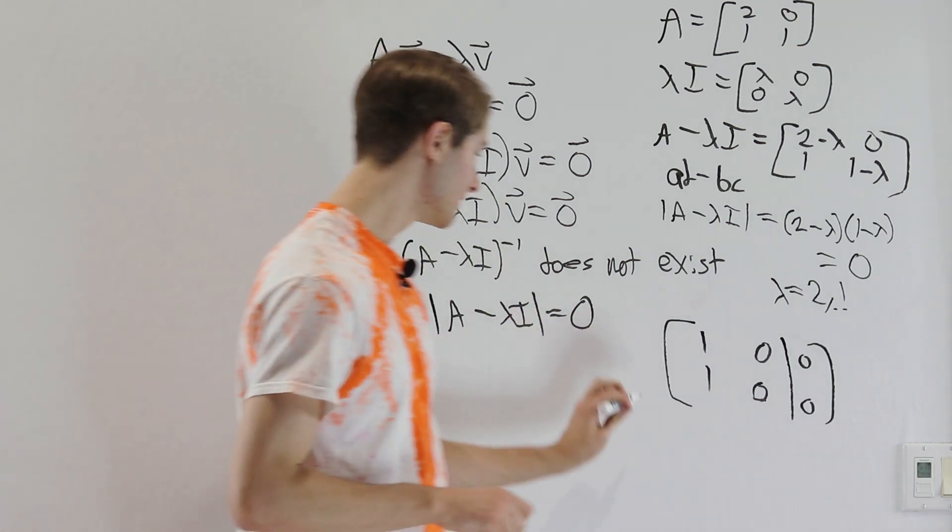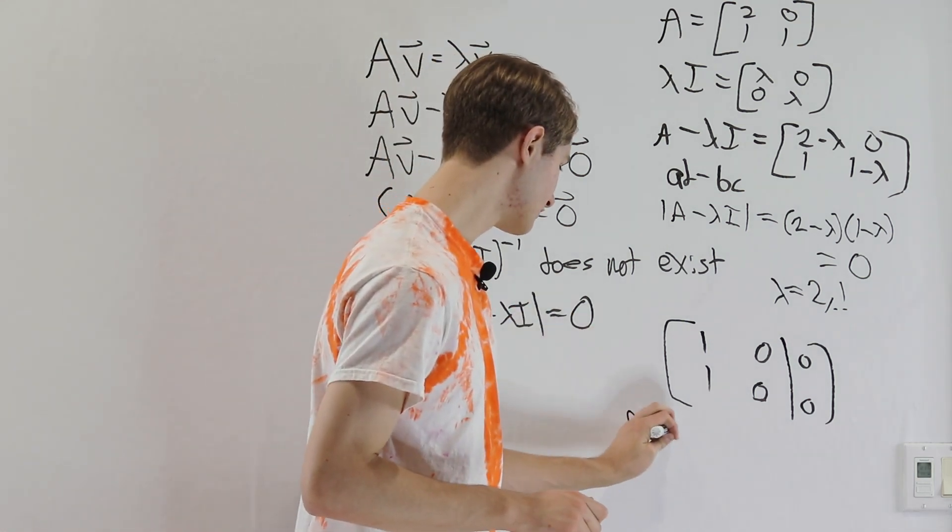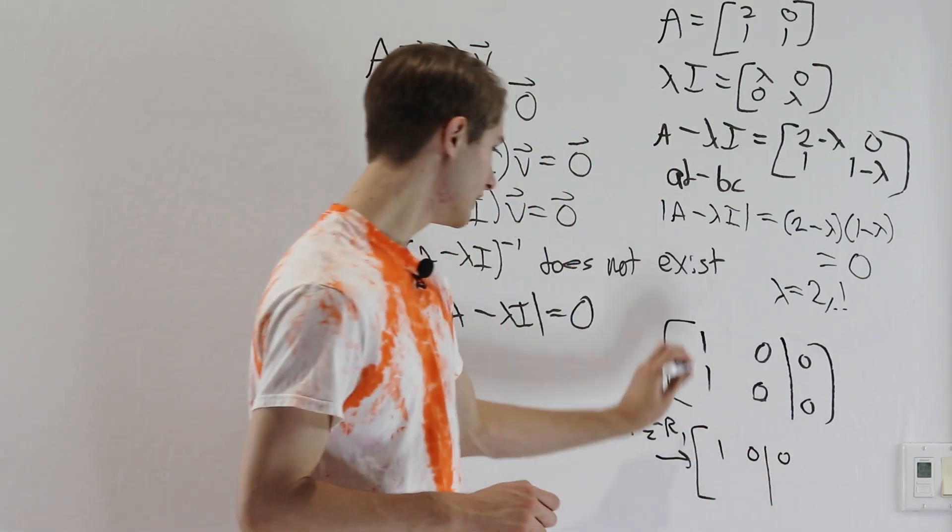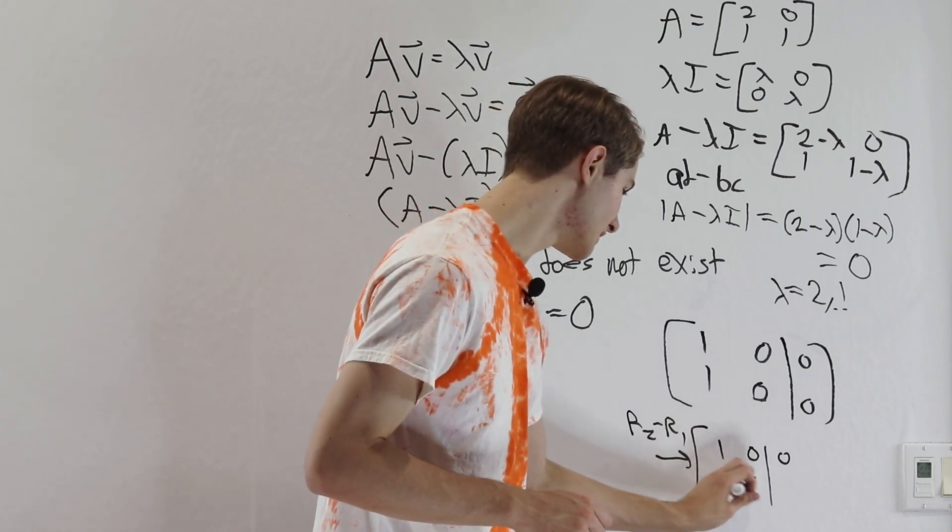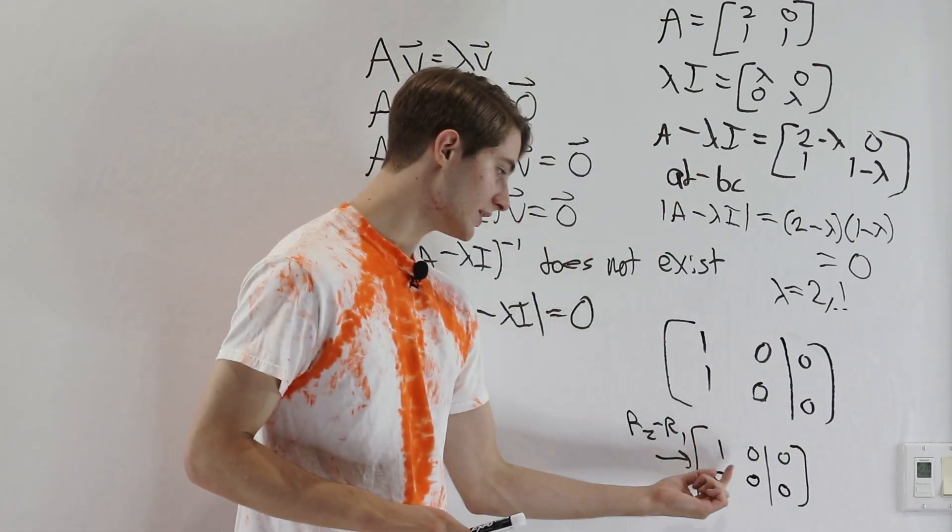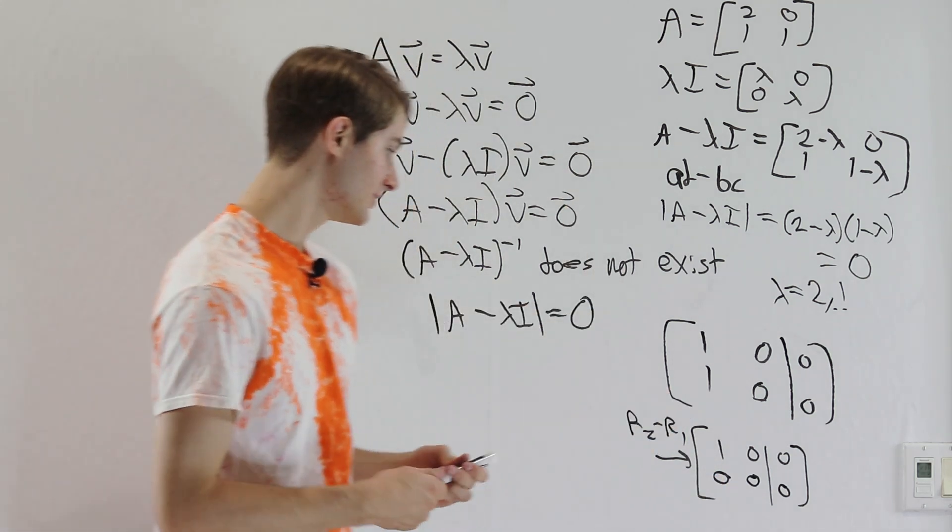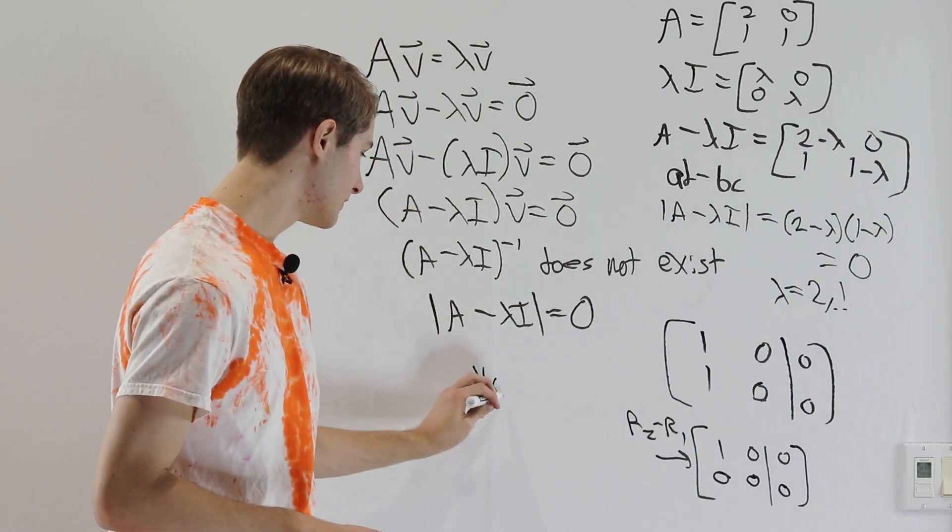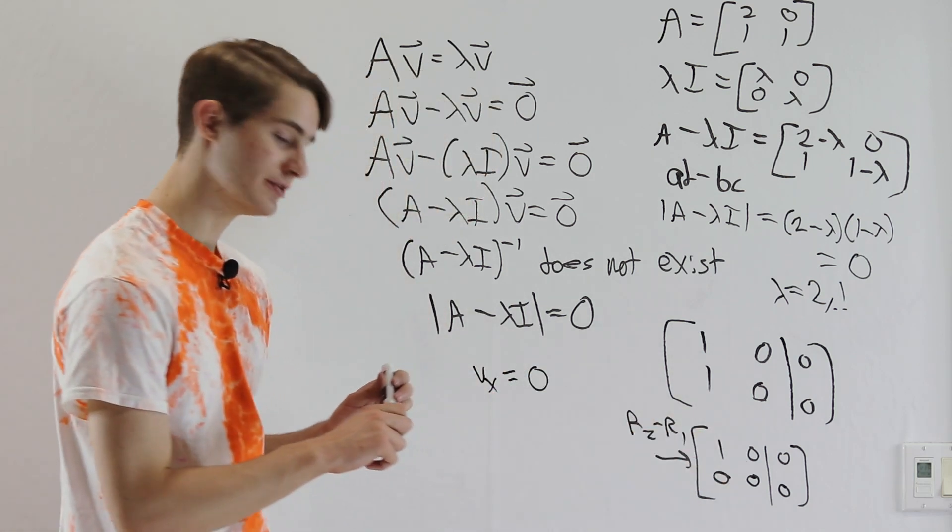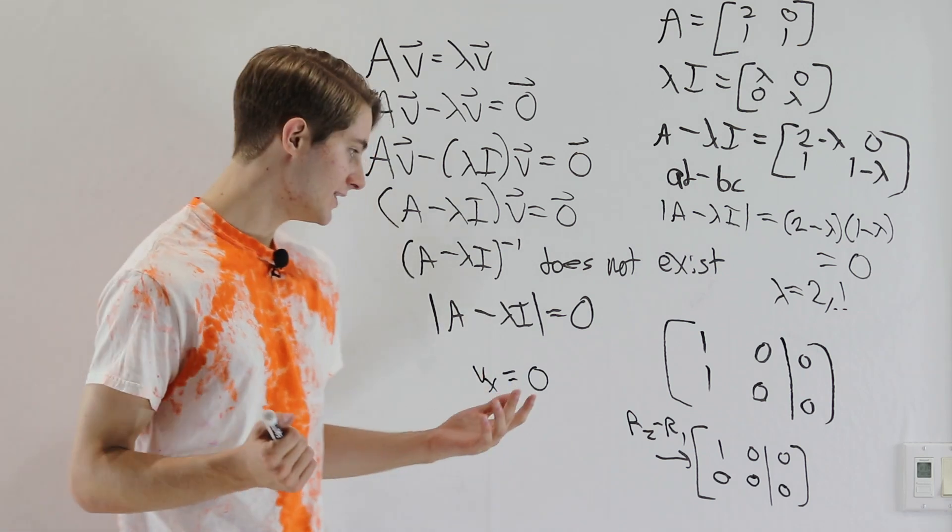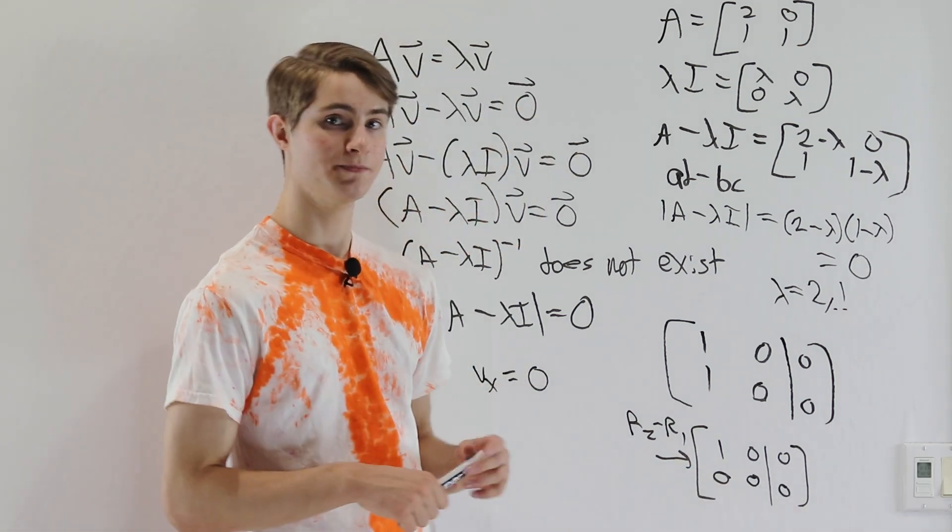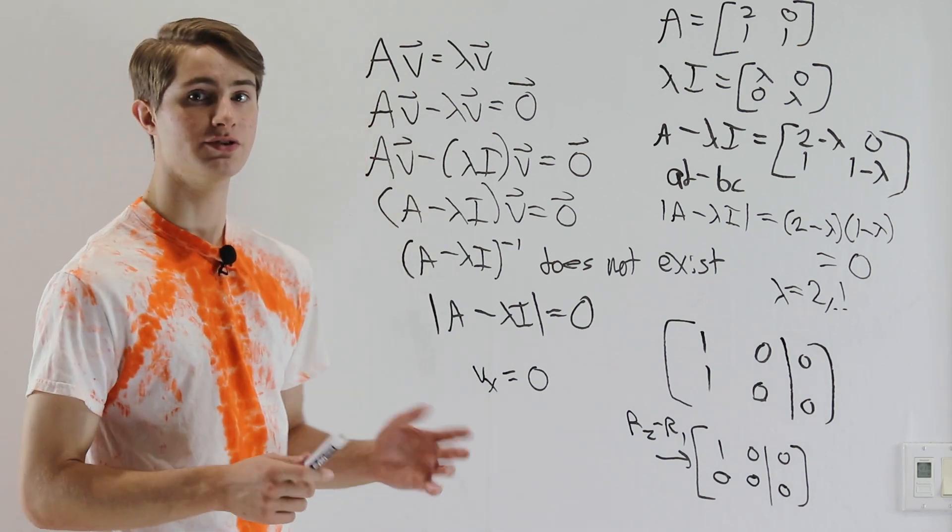So we have this augmented matrix right here. Now if we want to solve this, we can just do row 2 minus row 1, and that will get us to the matrix [[1,0,0],[0,0,0]]. So we just get a row of zeros along the bottom. And what this is telling us, if we bring it back into the idea of systems of equations, is that the x component of V, this first component, is going to be equal to 0. What is the y component? Well, it can be anything because we don't have any information about what the y is in this system. So we can pick our y value to be anything we want.